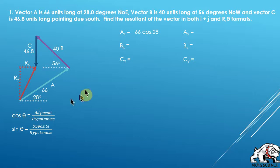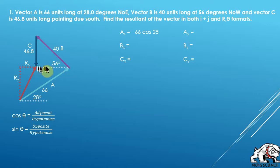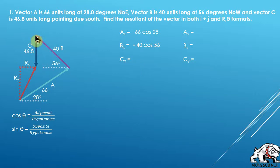Vector B in the x direction is going to the left, so Bx equals the hypotenuse 40 times cosine of 56, but since it's going to the left it is negative — you have to put that negative sign in yourself. It's going left, it's negative; going down, it's negative. Vector C in the x direction is zero because C is entirely in the y direction.